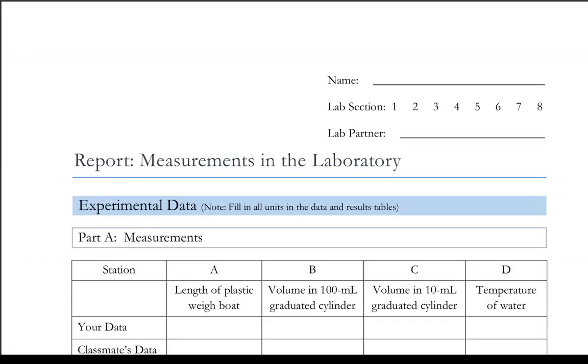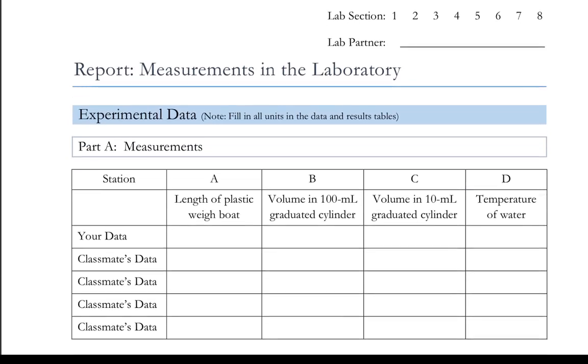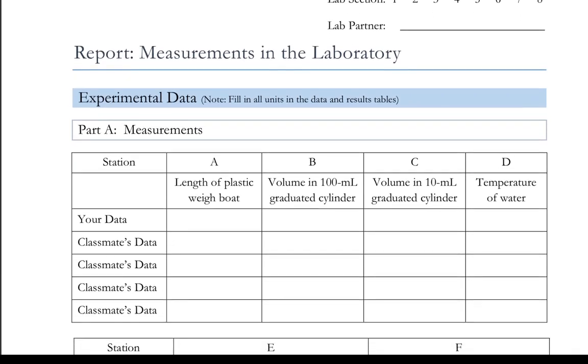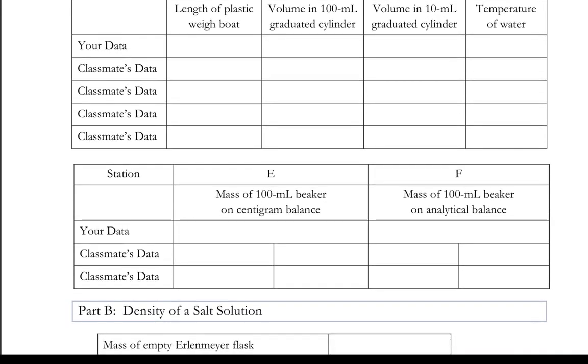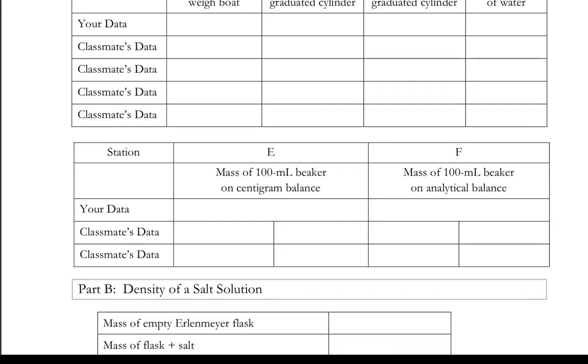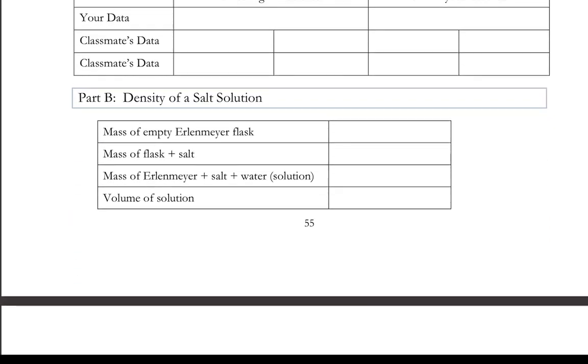Then comes the report. This is what you will fill out and submit in Canvas online. You will be reporting your data for Parts A, B, C, and D in this table. You will be reporting your data for the mass of the 100 ml beaker using the centigram balance and the analytical balance. Again, no classmates data. And then in Part B is where you give the density information.